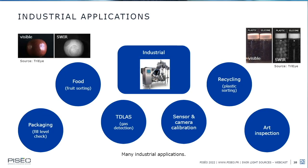In industrial markets, there are many applications — still a small market but growing. Food sorting is one example: SWIR radiation can go through the skin of fruits, and thanks to water absorption of radiation, moisture inside fruit can be easily detected, enabling sorting. For recycling, it can be difficult in the visible domain to differentiate plastics, but in the SWIR domain, thanks to the spectral signature of plastics, different plastic types are easily distinguishable, making SWIR an opportunity for the recycling industry.